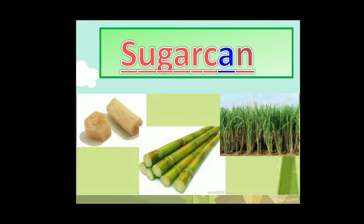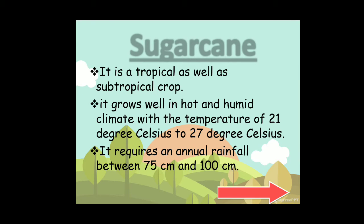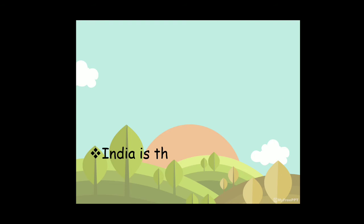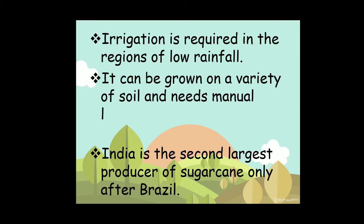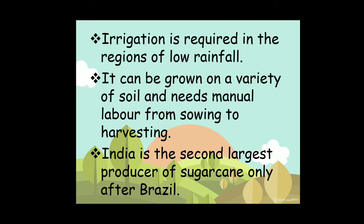Features of sugarcane: it is a tropical as well as subtropical crop. Regarding climatic conditions, it grows well in hot and humid climate with a temperature of 21 degrees Celsius to 27 degrees Celsius. It requires an annual rainfall between 75 cm to 100 cm. Irrigation is required in regions of low rainfall. It can be grown on a variety of soils and needs manual labor from sowing to harvesting.